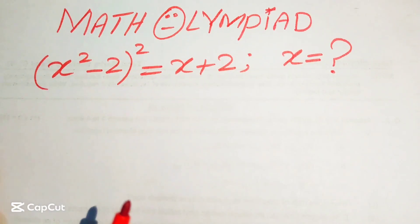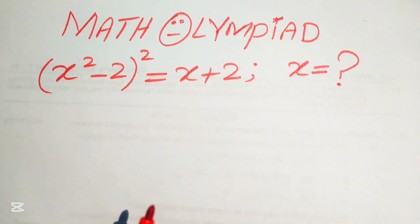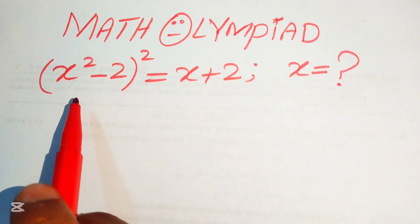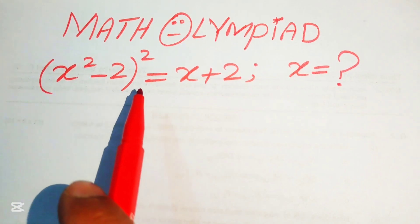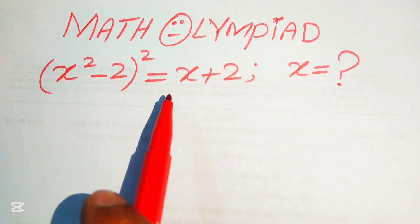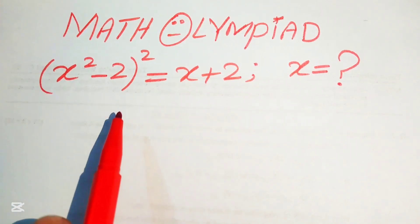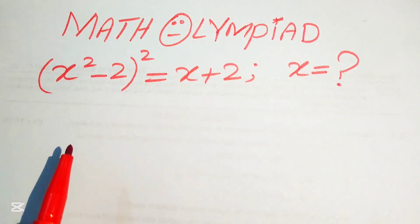Hello everyone, welcome. We solve this algebra problem: (x² - 2)² = x + 2. We solve this for the values of x.